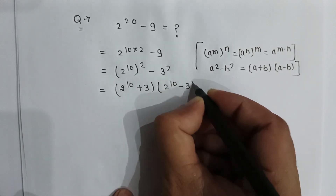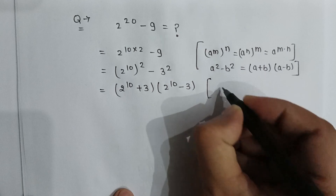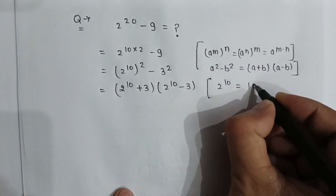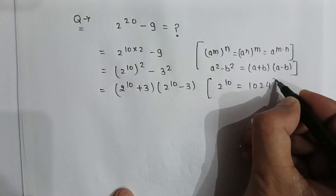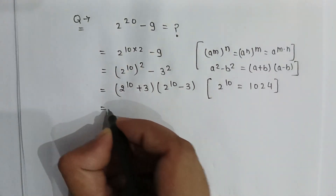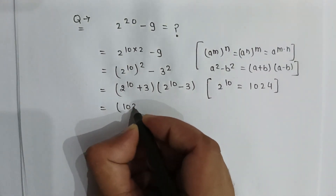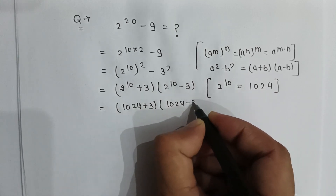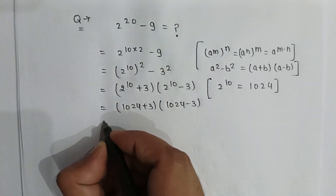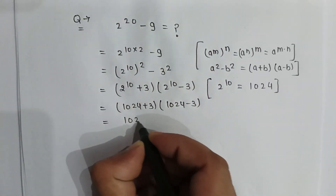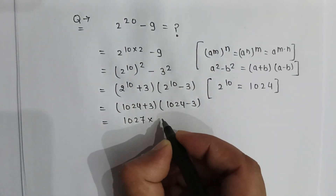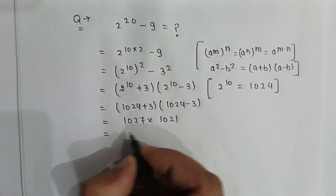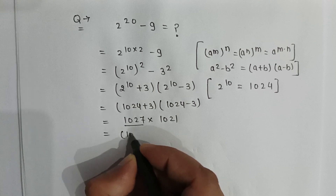As we know that 2 to the power 10 is equal to 1024. So it will be (1024 plus 3) multiplied by (1024 minus 3), which gives us 1027 multiplied by 1021.